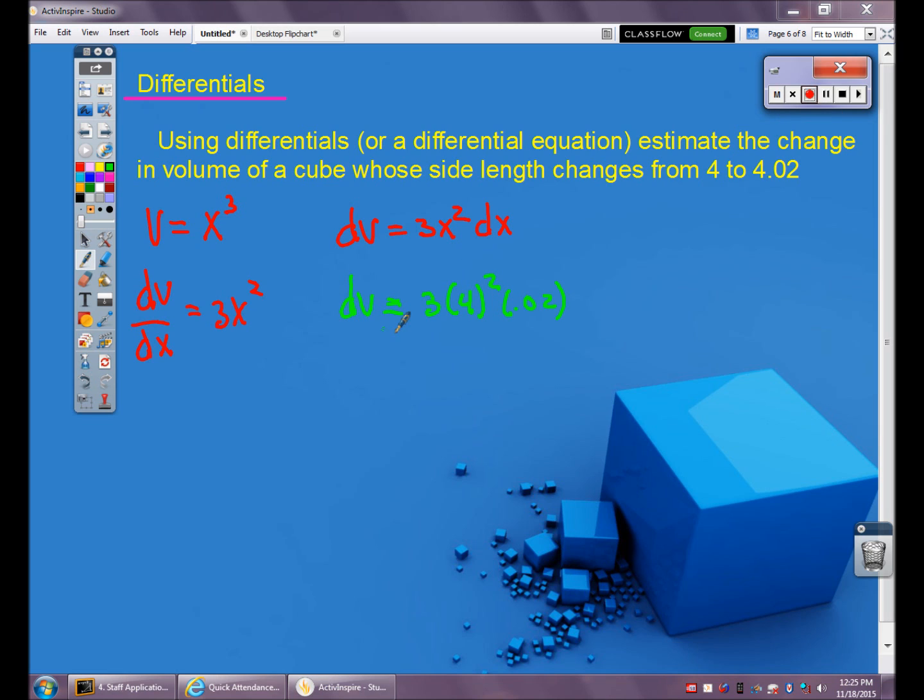So my change in volume would be 3 times the x value for the side length, which was 4 squared, times dx. dx is the change in x. When I went from 4 to 4.02, I had a change of 0.02. So this is dx. So calculating that without a calculator, 4 squared is 16, times 3, and then multiply it by 0.02. That's going to give you my change in volume, in this case, 0.96 units cubed.